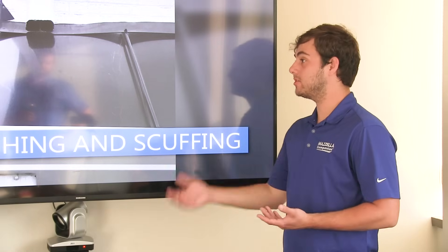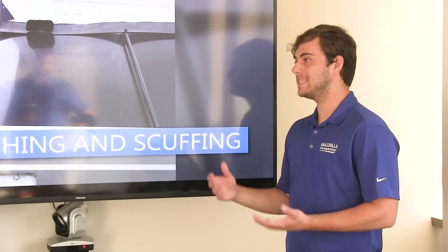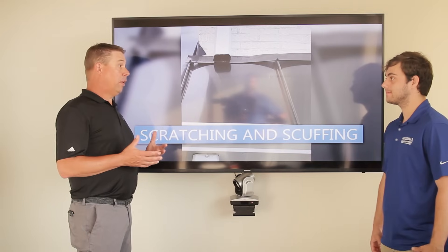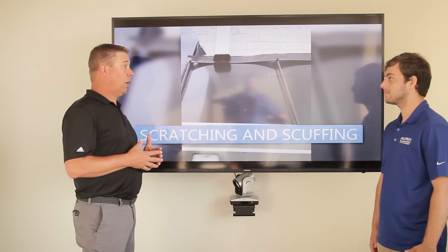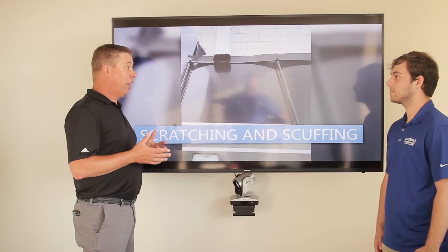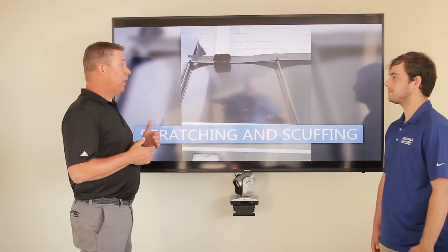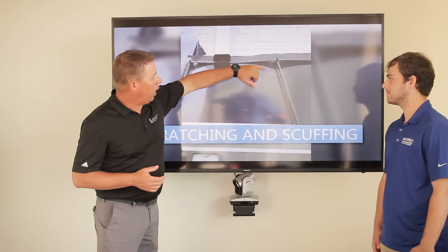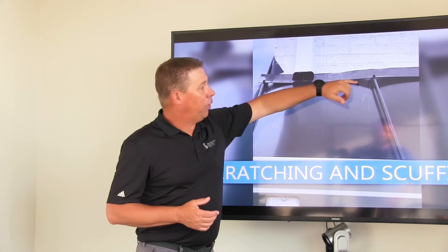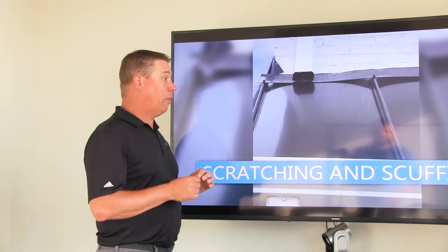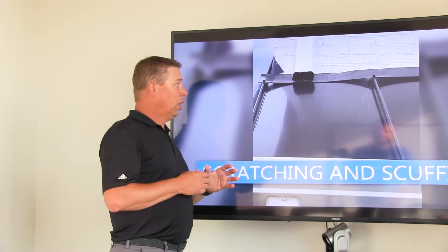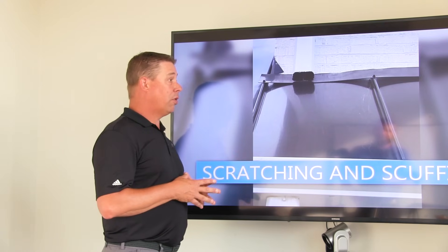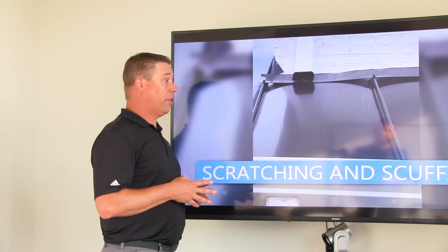So if you notice that your roof is scratched or you see scuffing, what are some ways to remedy that? I definitely recommend getting a manufacturer paint pen — specifically from the manufacturer — to try and fill these areas in. If you don't remedy it with the paint pen, it can lead to corrosion and degradation of your material.